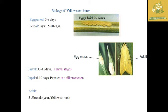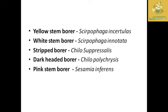The egg life period is around five to eight days. The female lays eggs at a rate of 15 to 18 eggs per mass. The larval life period is around 33 to 41 days, with five larval stages. The pupal stage takes six to ten days in a silken cocoon. The adult produces three to five broods per year, and this pest is commonly known as the yellowish moth.